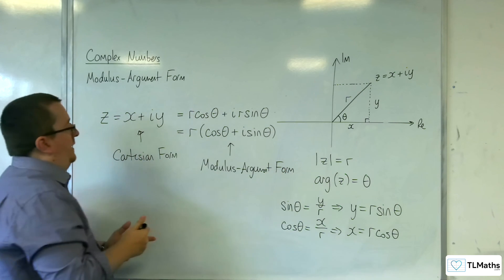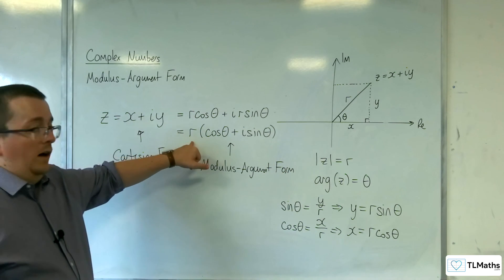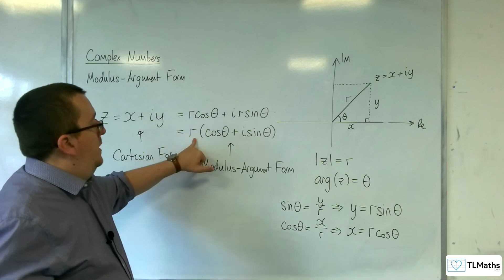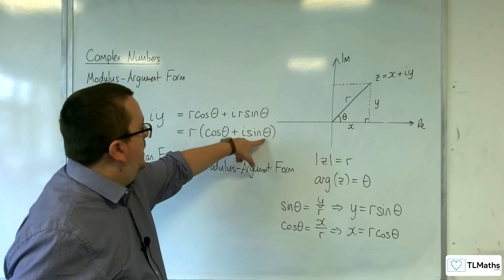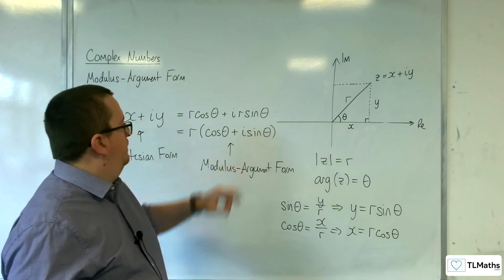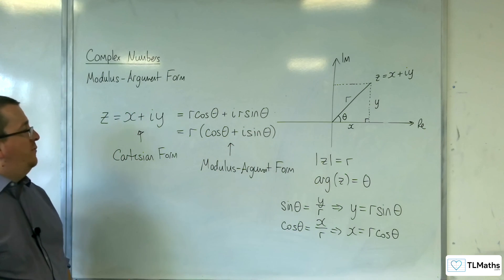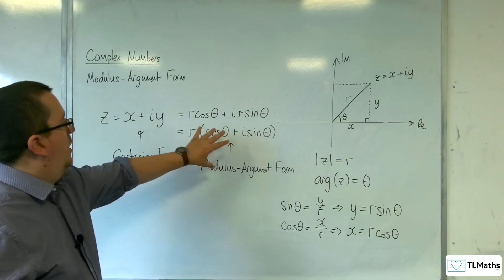So, it contains R, so the modulus, and the angle is contained in here. So this is the alternative way of writing a complex number.